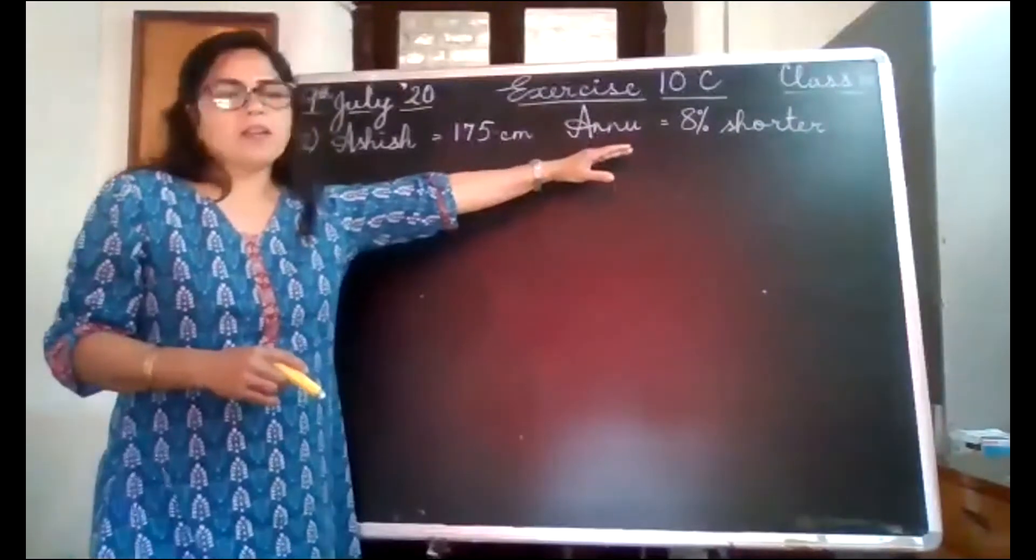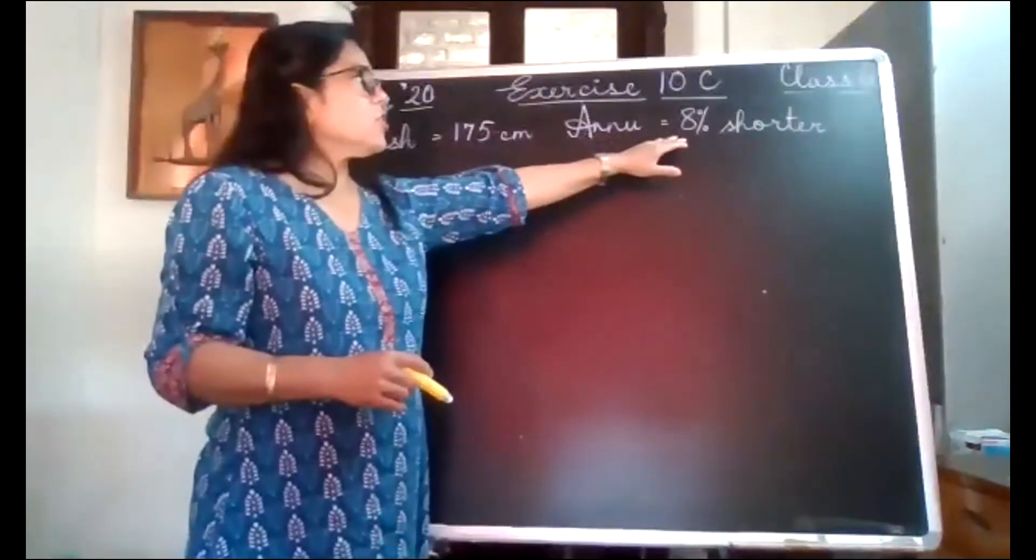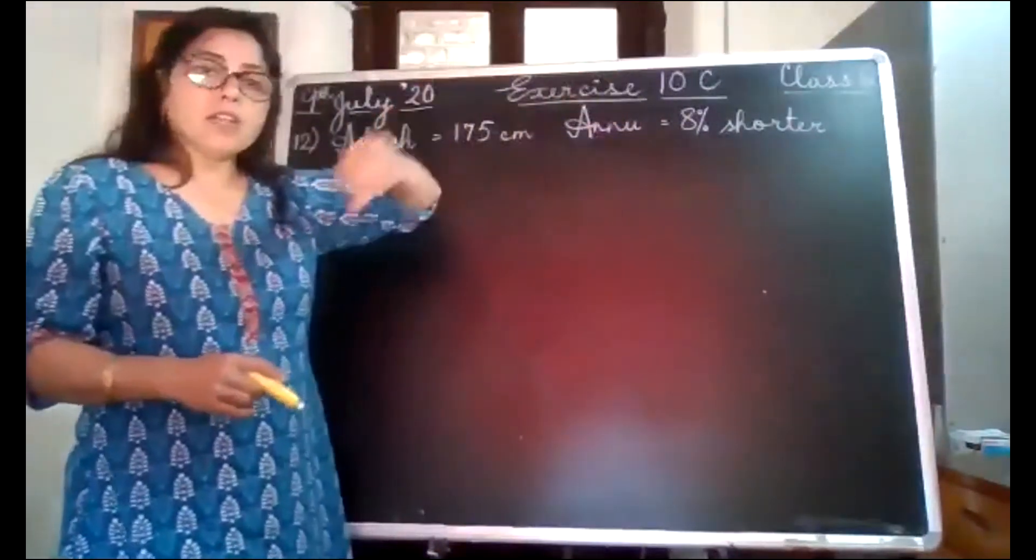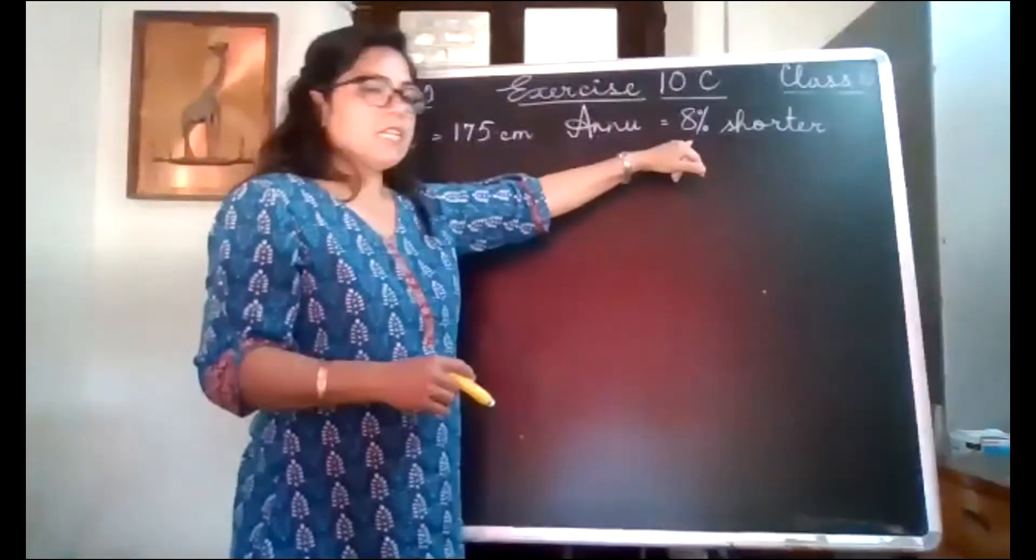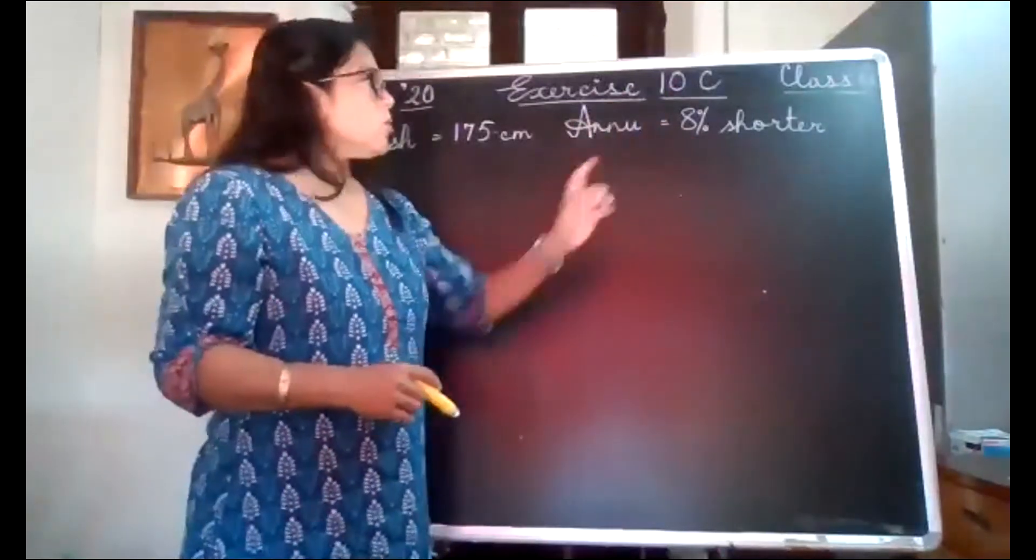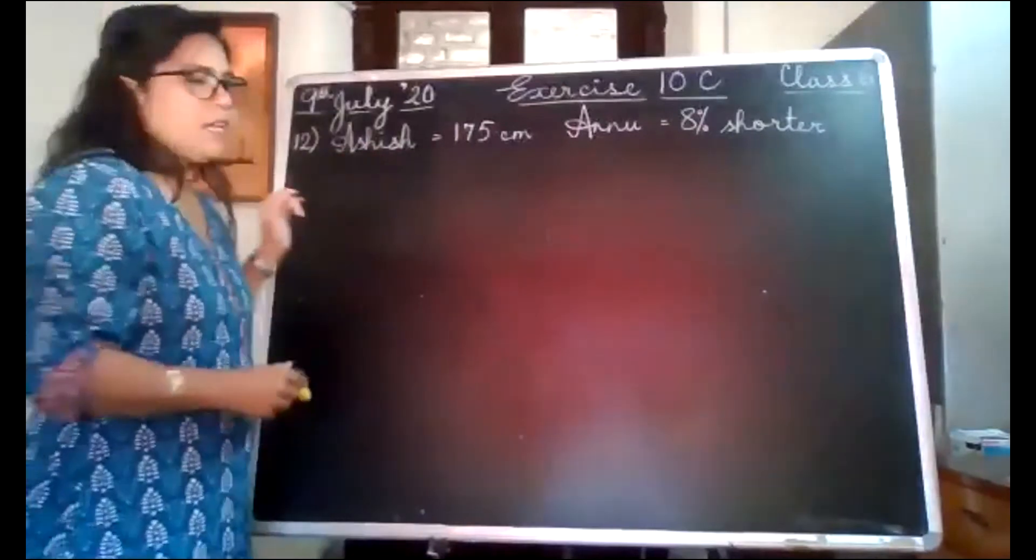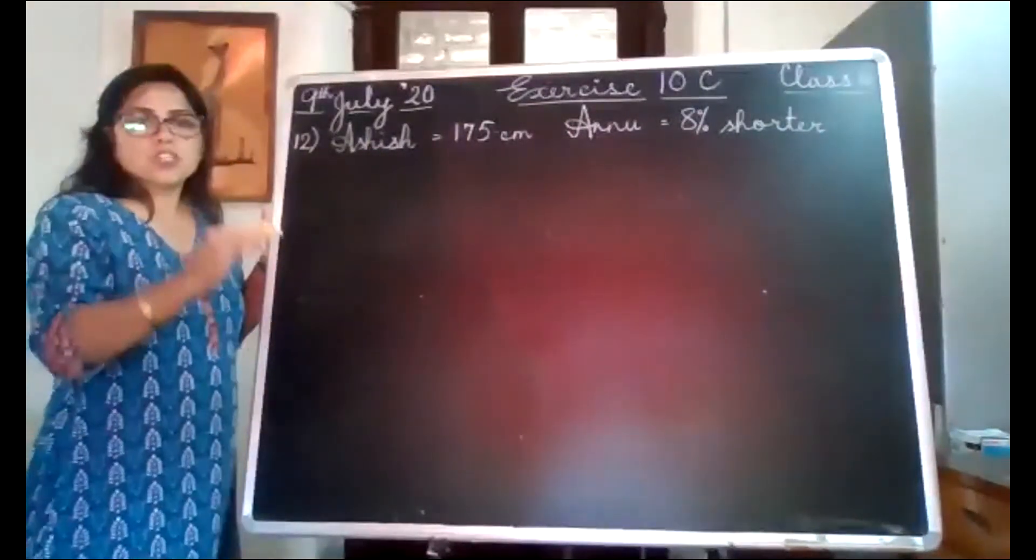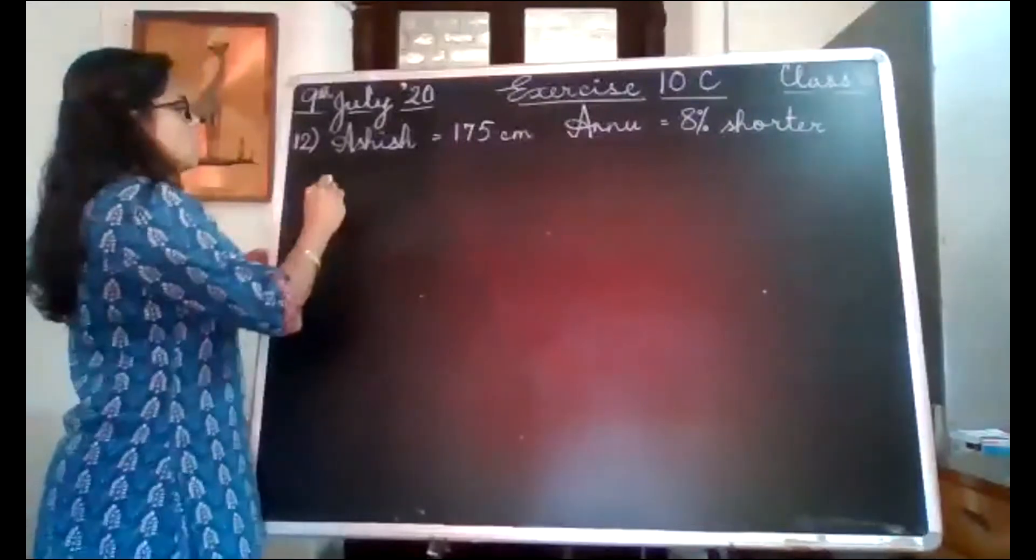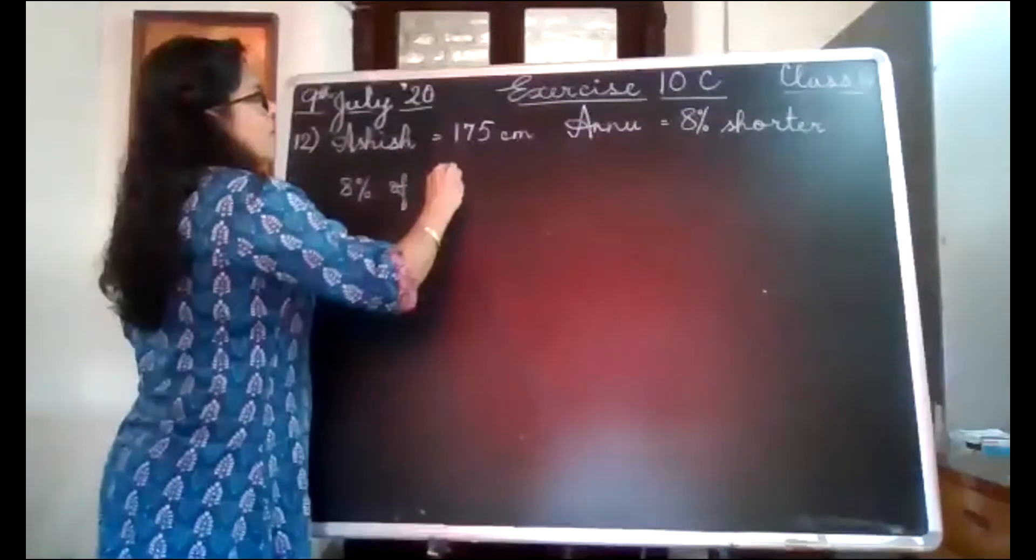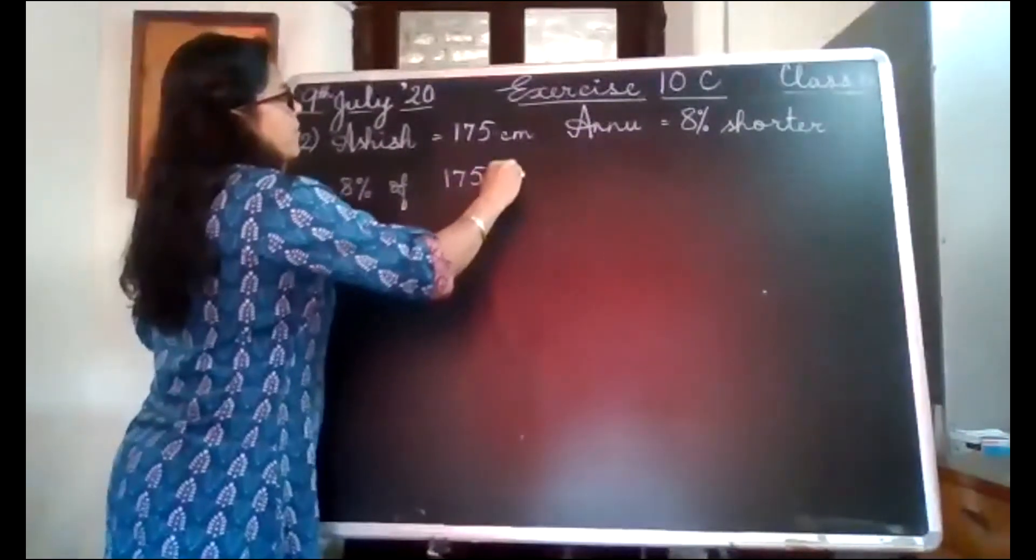Now because this is a percentage topic, they have given how much shorter Anu is in percentage. But we have already learnt that if a percentage is given, we can very easily find out the value. So we have to find out 8% of 175. That many centimeters Anu is shorter than Ashish. So to find that out, you will do 8% of 175 cm.